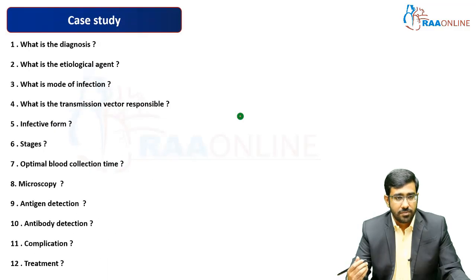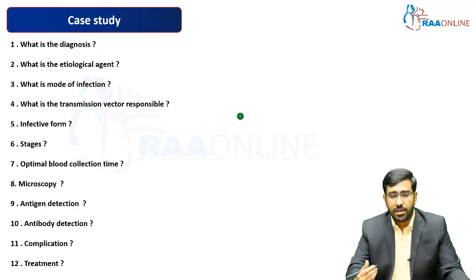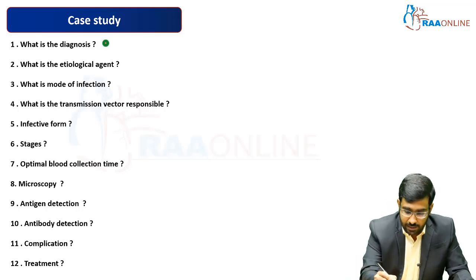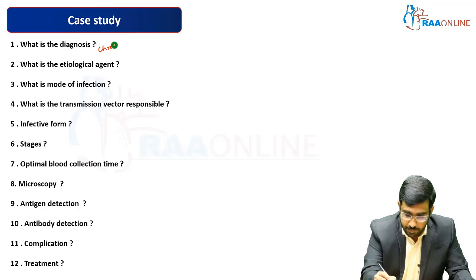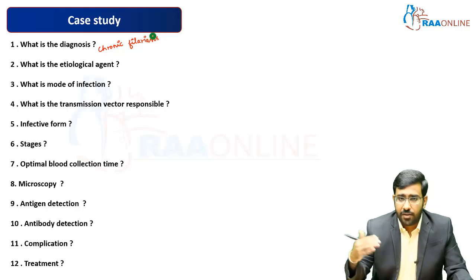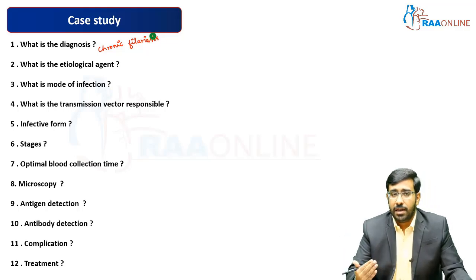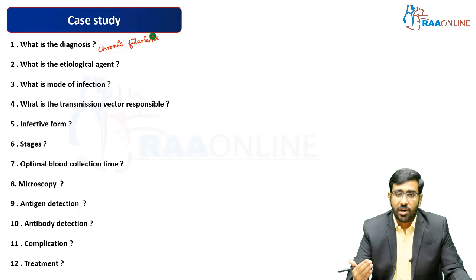Question number one: what is the diagnosis here? The diagnosis is probably chronic filariasis, because it is happening after many years of episodes of acute adenolymphangitis, and there is swelling of the leg. So this is a case of chronic filariasis.